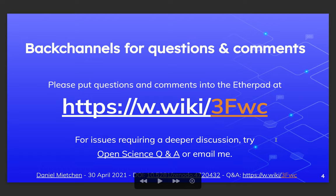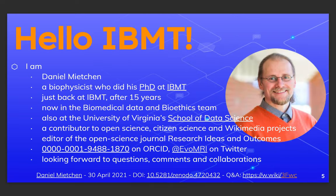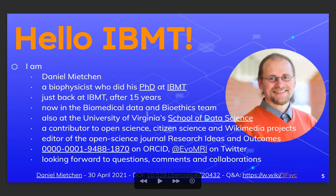I'll show my email at the end as well. A bit about me: I'm a biophysicist who did his PhD at the Fraunhofer Institute of Biomedical Engineering, about 15 years ago. I've been working in other contexts since, but recently rejoined them. I'm now part of the biomedical data and bioethics team, and also at the University of Virginia School of Data Science. I'm a contributor to open science, citizen science, and Wikimedia projects, and an editor of the open science journal Research Ideas and Outcomes. This is my identifier on ORCID, an identifier system for researchers, and this is my identifier on Twitter. I look forward to questions, comments, and collaborations.